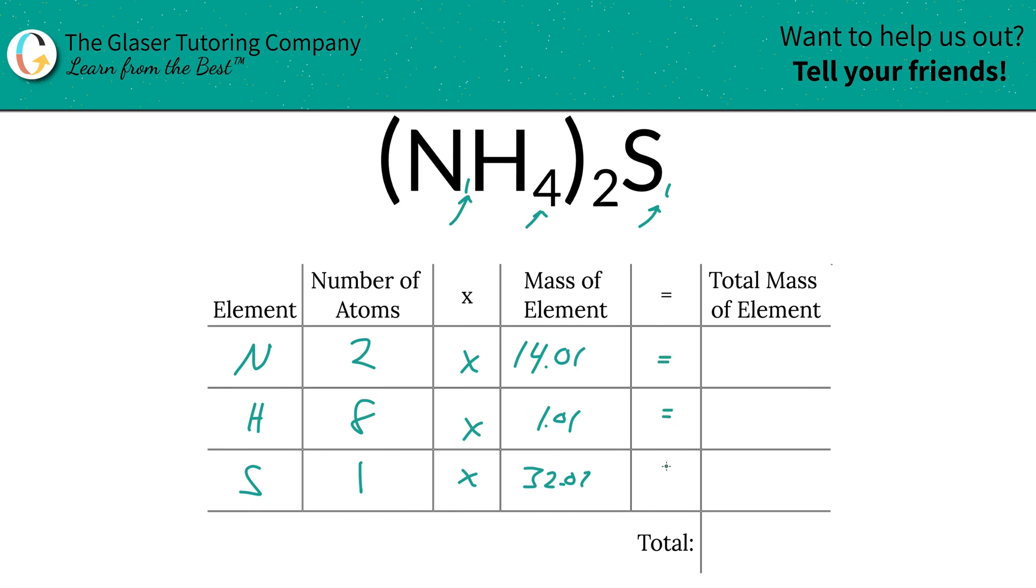Then we're going to multiply the row across to find the total mass of the element in the compound. So this is going to be 28.02. This is going to be 8.08, and this is simply going to be 32.07.